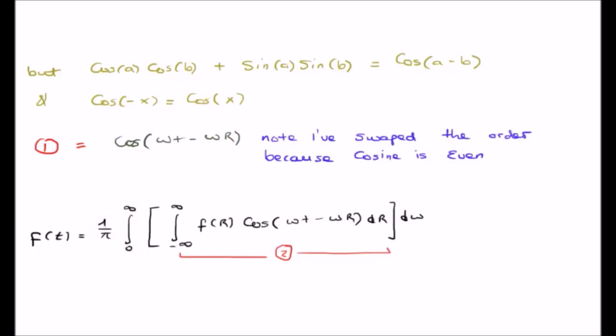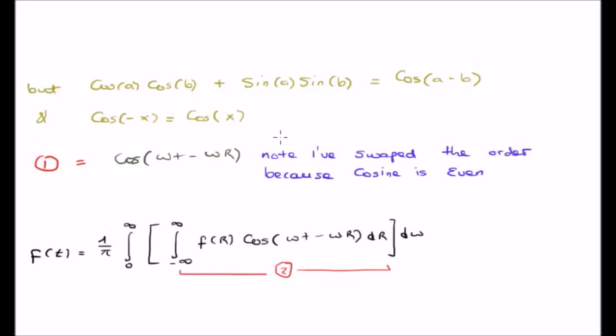We are still integrating with respect to omega, but the expression in the middle can be rewritten as a function of R multiplied by cosine omega t minus omega R, which of course we integrate with respect to R. I'm going to call the expression in the middle with the infinite integral expression number two.